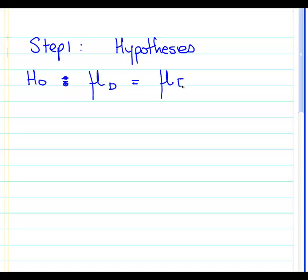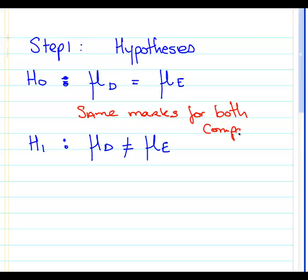So step one: hypotheses. H0 is that the average for DeltaTech is equal to the average for Echelon. So the alternative is that they are not equal to each other. So let's be not equal to. Now I'm just going to rewrite these in terms of... Same marks for both companies, okay? Just write in a little description about what the null hypothesis is telling you. So a difference in the average mark between companies.